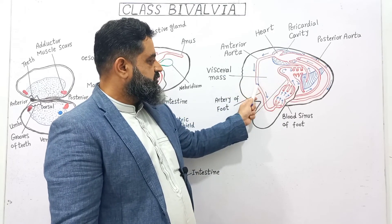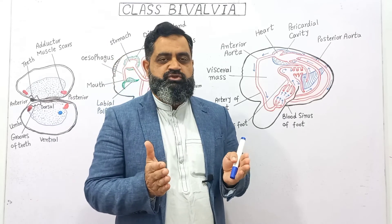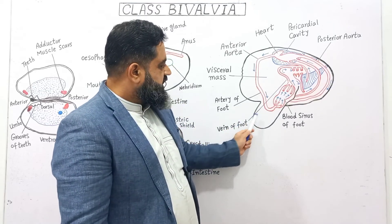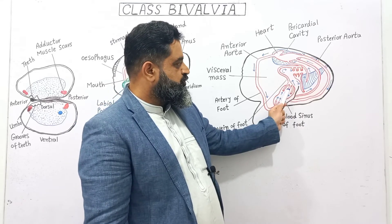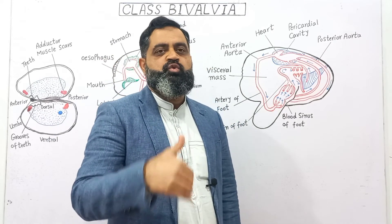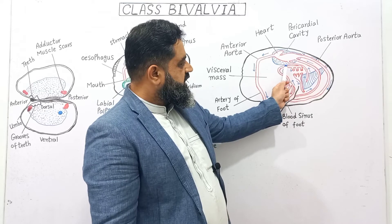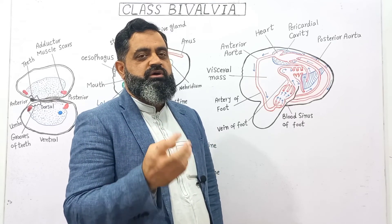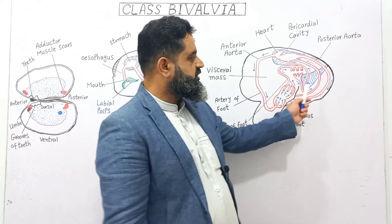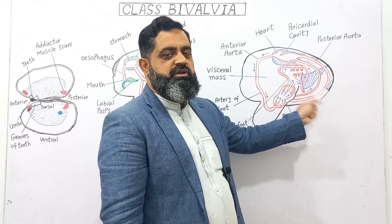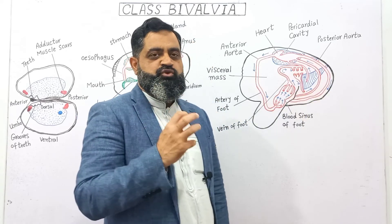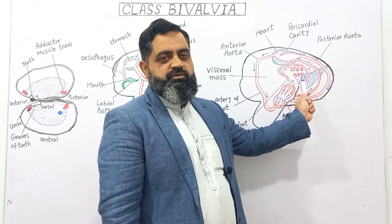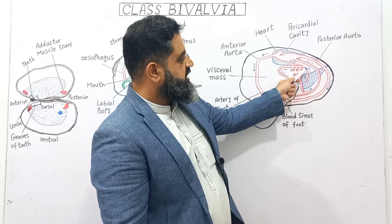The visceral mass region also receives blood. Blood enters through the blood sinus of the foot, bathing the tissues where gaseous exchange takes place — oxygen is given out to tissues and CO2 is taken up. This blood is then collected from the blood sinus of the foot and moves into the vein of the foot, which carries it toward the mantle cavity where the gills are present and oxygenation takes place. Water entering through the incurrent siphon passes over the gills; oxygen is absorbed into the blood and CO2 is released. When blood becomes oxygenated it is transported through a vein into the heart.